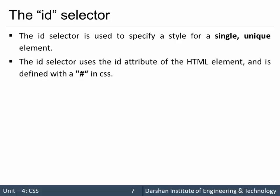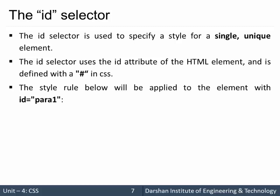The ID selector uses the ID attribute of the HTML element. We are supposed to specify the ID to that particular element in HTML, and in CSS we define it with a hash (#). For example, using style — the rule below will be applied to the element with the ID para1. Inside the HTML you are supposed to specify the attribute ID to the particular element where you want to apply the CSS.